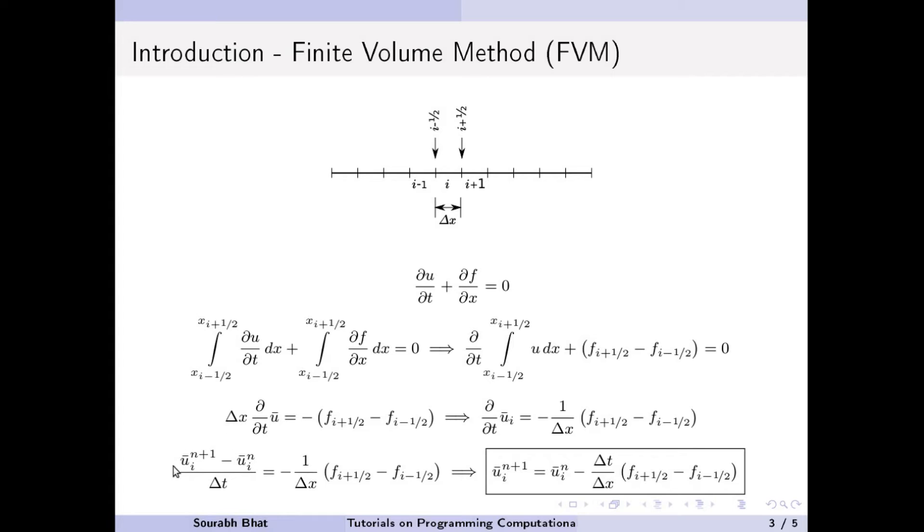We can also integrate this over time. And once we do that, if we use the Euler integral, we will end up with this term here. f here will become the average values over time once we apply the integrals. And finally, we can progress in time by using this form. That is, we have just kept this term on the left hand side and the remaining terms I have taken on the right hand side.